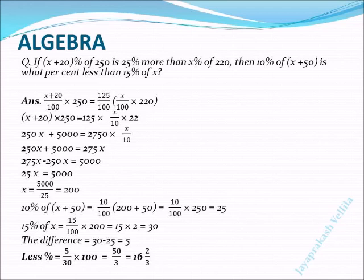Multiply by 100 on both sides. The hundreds on the denominator become 1, then on the left side remains x + 20 × 250, and the right side becomes 125 × (x/10) × 22.